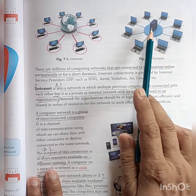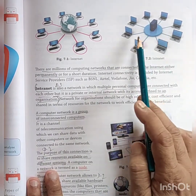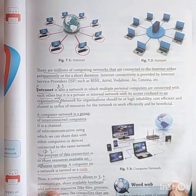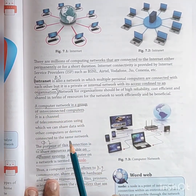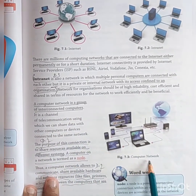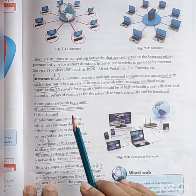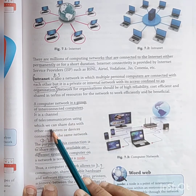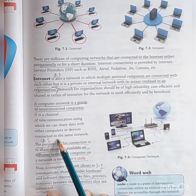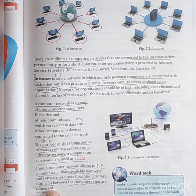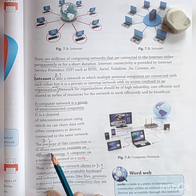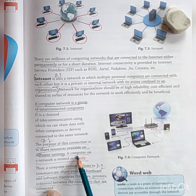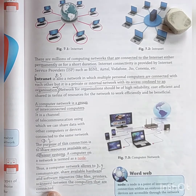Internet is globally connected, while intranet is a private network — only some organization can access it privately. In a computer network, once devices are connected to the same network, the purpose is to share the sources available on different systems. Computers on the network are termed as nodes.